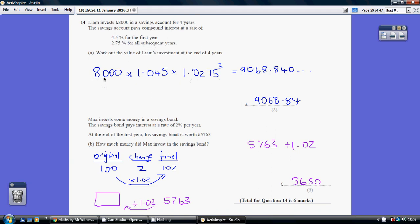So our answer is going to be 8,000 times 1.045 times 1.0275 to the power of three. That gives us 9068.84 to the nearest penny.